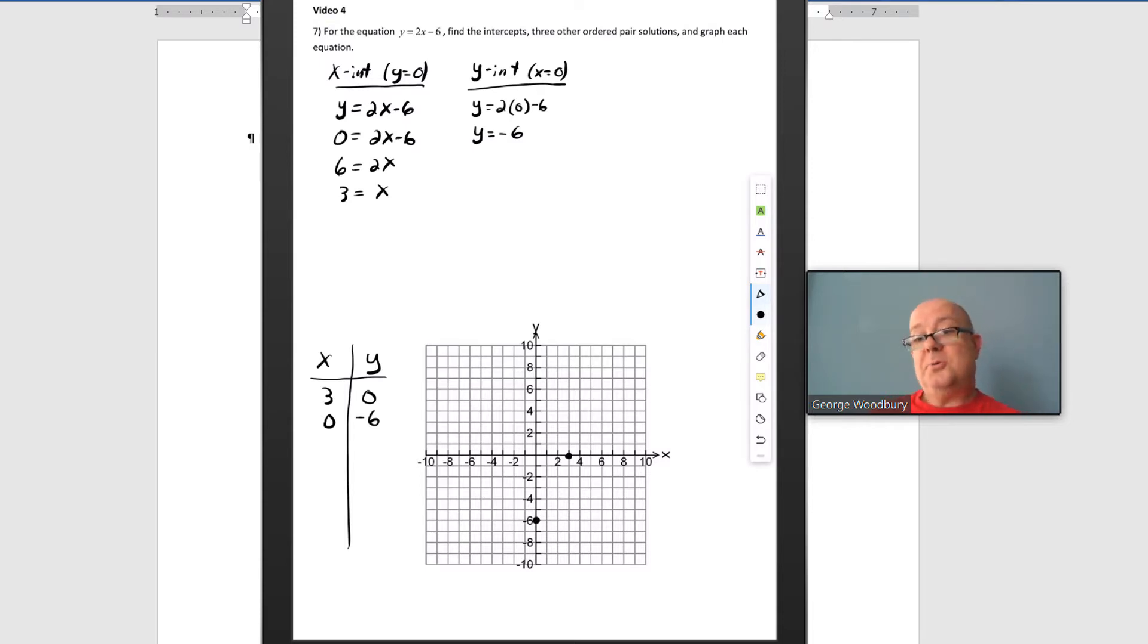So that's two points. Now the creativity comes in, we're going to try to find a few more ordered pairs. Let's try some points near zero and three. I'm going to start with x equals 1, y equals 2 times 1 minus 6, y equals 2 minus 6, or negative 4. So 1 negative 4 is another point. We could do x equals 2, y equals 2 times 2 minus 6, that's 4 minus 6, or negative 2. 2 to the right, down 2.